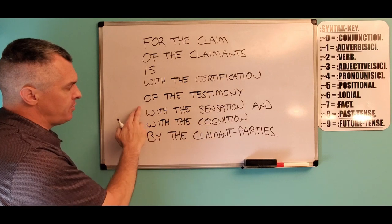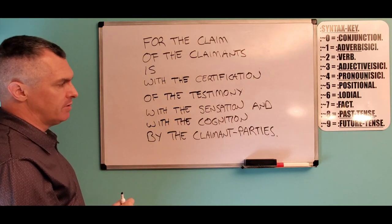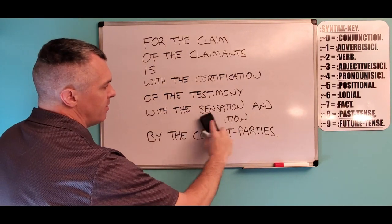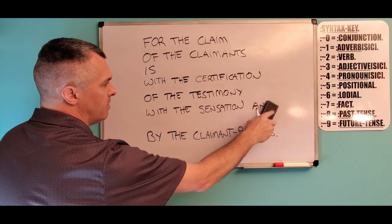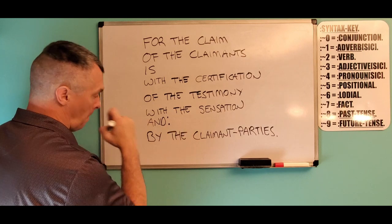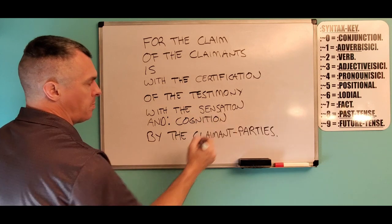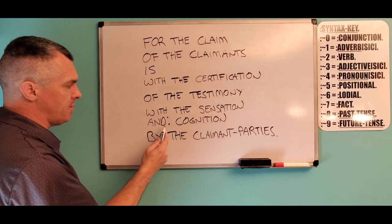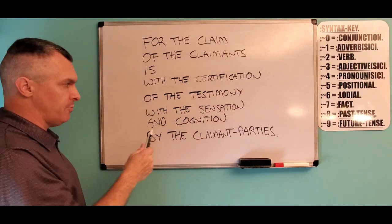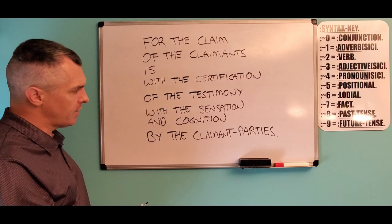There are a couple different ways that you can write this part — with the sensation and with the cognition. Rather than writing out this positional and lodeal with 'the,' you could actually write it out differently, which says the same thing: 'with the sensation and with the cognition.' You can simplify it even further and write 'with the sensation and cognition,' which would be using the syntax key 56707. And then 'by the claimant parties.'